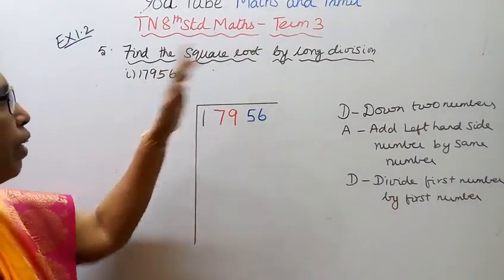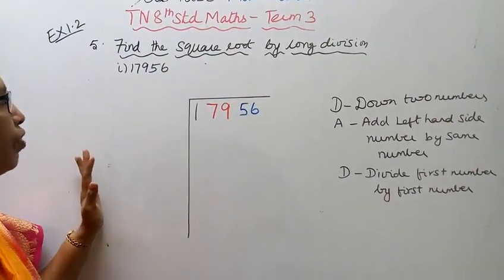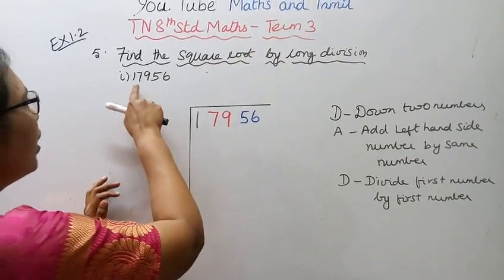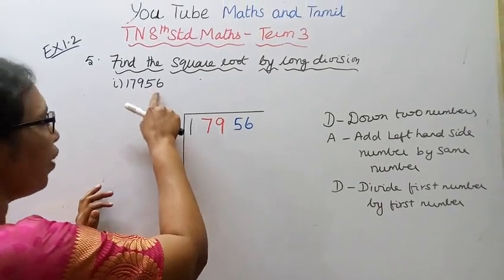Find the square root by long division method. First problem: 17956.